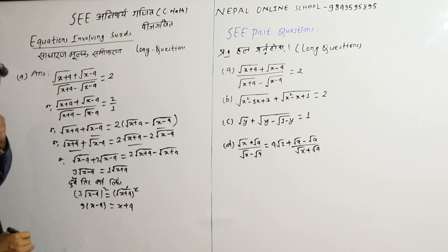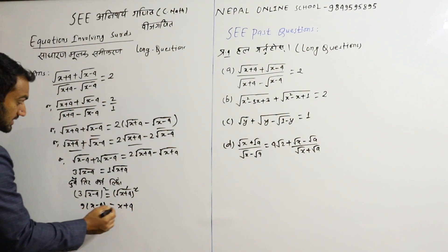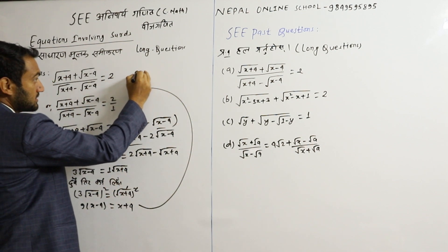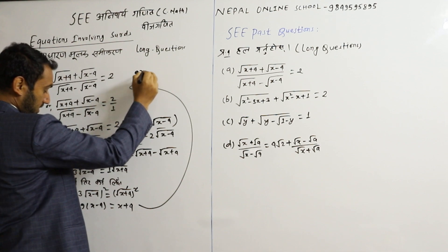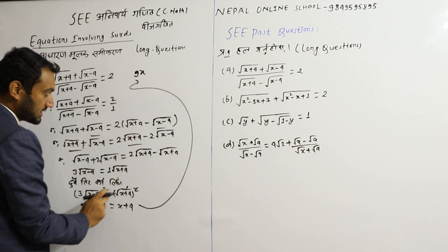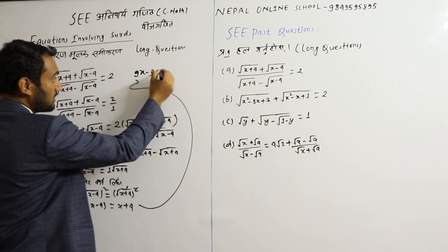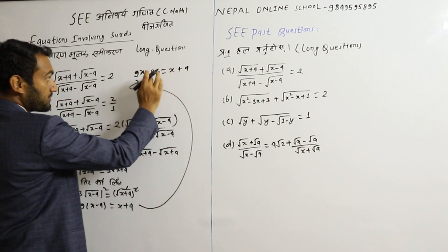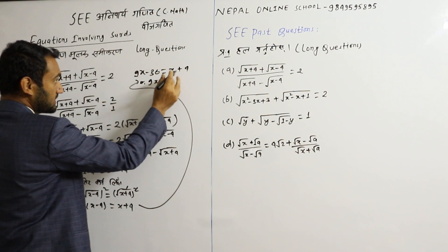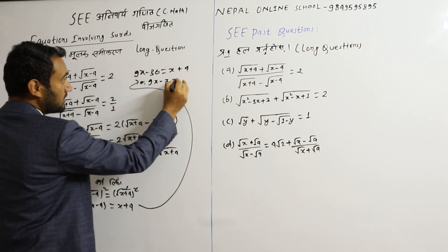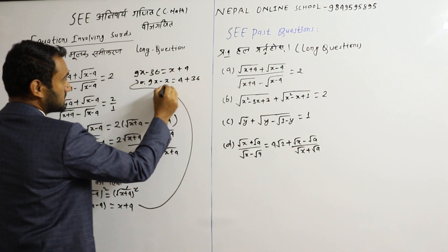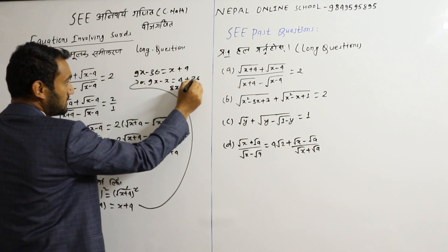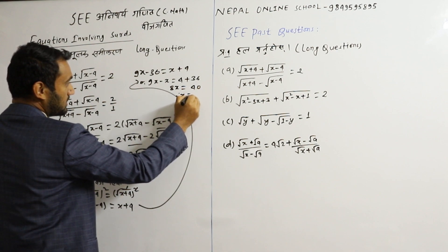Plus 4. So now we have solved: 9x minus 36 equals x plus 4. So we do 9x minus x equals 4 plus 36, which gives 8x equals 40, so x equals 5.